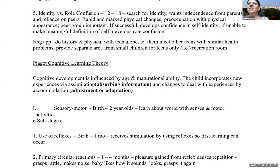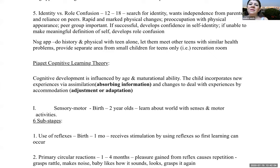Identity versus role confusion: twelve to eighteen years. Adolescents search for identity, want independence from their parents, and increasingly rely on peers. There is rapid and marked physical change with preoccupation with physical appearance. If successful, they develop confidence and self-identity; if unable to make meaningful definitions of self, they develop role confusion. As a nurse, conduct history and physicals with the adolescent, let them meet other teens with similar health problems, and provide separate areas for teens only, such as a recreation room.